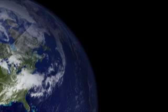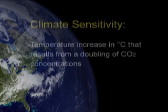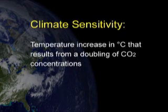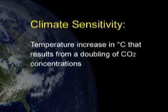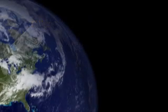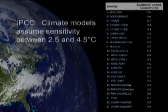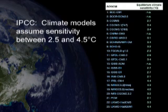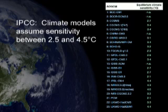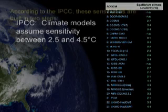Climate scientists have developed a useful shorthand for the relation between CO2 and warming called climate sensitivity. Climate sensitivity is defined as the amount of warming we might expect from a doubling of CO2 levels. The UN IPCC, in their last report, found that many climate models are using sensitivities in the 2.5 to 4.5 degrees Celsius range. These relatively high sensitivities necessarily drive large forecasted temperature increases.